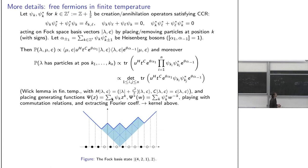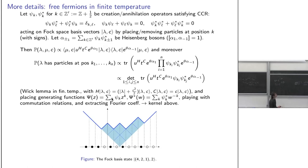This probability can be written as a trace on Fock space. By a result going back at least to Gaudin in the 1960s — the finite-temperature Wick lemma — since everything is bilinear in the fermions, one can write n-point correlation functions as determinants of the two-point function. Depending on the model, one can also get Pfaffians or more complicated objects, always from the two-point function.